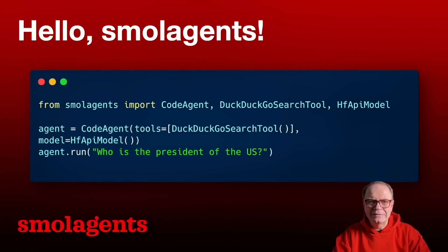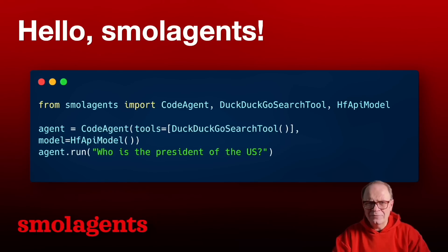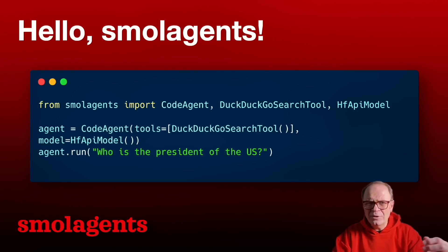In this first Hello World example, we can see how easy it is to create an agent and pass a tool. The example uses the HuggingFace API model library, for which you need a HuggingFace token and need to be a paying customer. As of today, the pro plans run for about $9 a month for US customers. But if you don't want to pay or if you're not a pro member, you can also use the LiteLLM models as we will see in the next example — and you can use any models, including open source models.